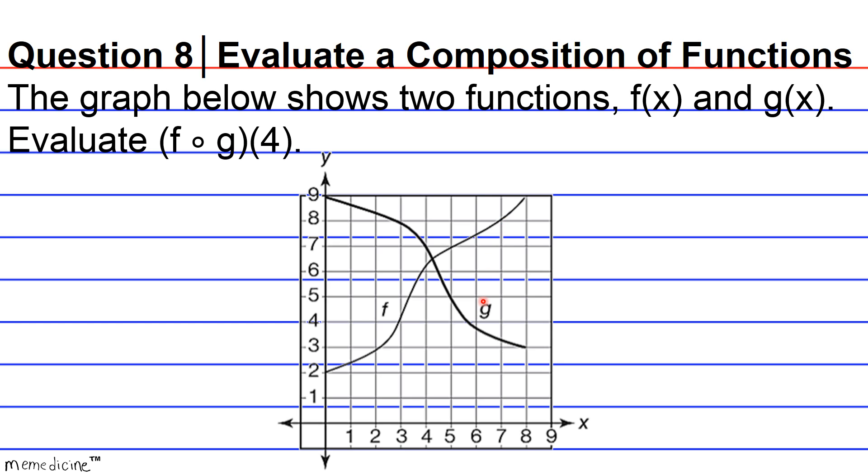So first, we're going to evaluate g of 4. And again, to evaluate g of 4 means to basically find the y value, or the dependent or output variable, of g when x is equivalent to 4. So that would be right here. And then we're going to evaluate f at that answer. Again, evaluating f at this answer means to find the y value of f when x is equivalent to g of 4.